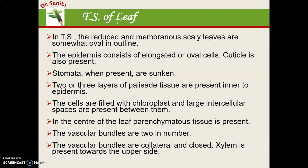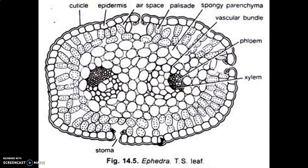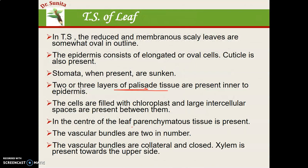Now we come to the transfer section of the leaf. The leaf in Ephedra is highly reduced and scaly, because foliage leaves are absent. The epidermis consists of oval cells with a cuticle present, since it is a xerophytic plant, and sunken stomata are present. Two to three layers of pellucid tissue are present toward the inner epidermis. The cells have chloroplasts with large intercellular spaces. In the center there is parenchymatous tissue and two vascular bundles present, which are closed and collateral.